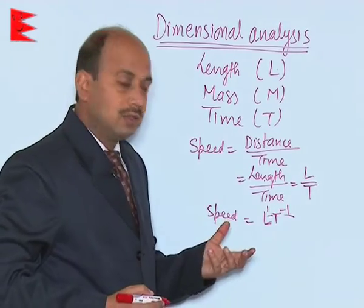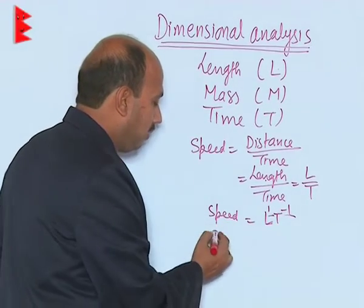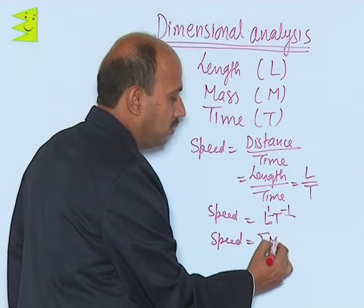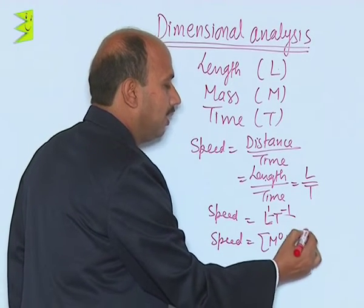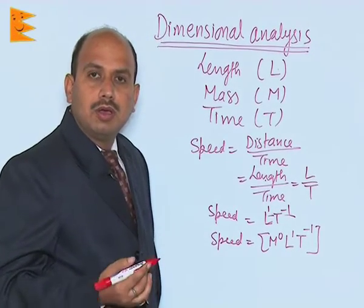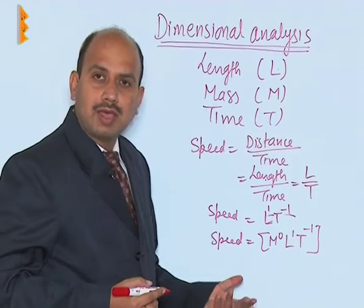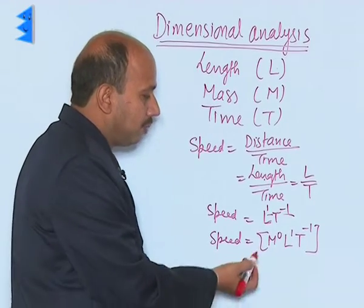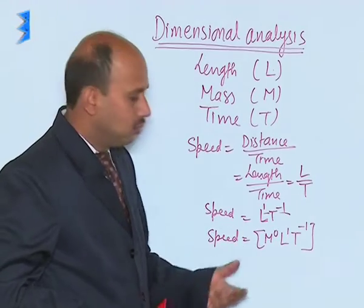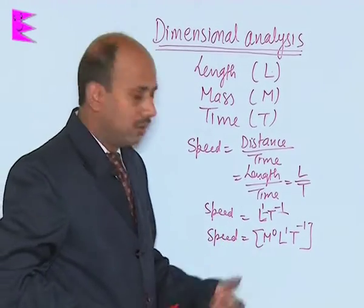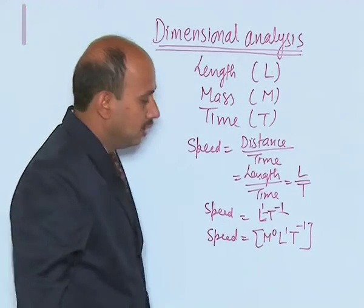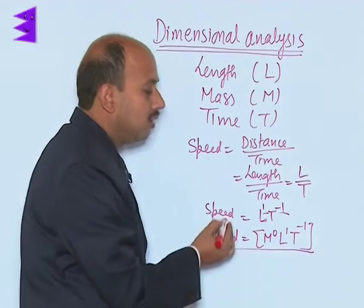Speed can also be written as M⁰ L¹ T⁻¹. Because mass is included in mechanics but has no use here, we put M raised to power 0, which equals 1. So M⁰ L¹ T⁻¹ is known as the dimensional formula.